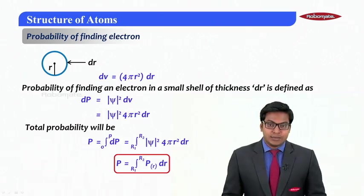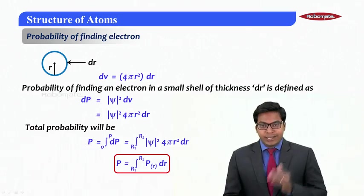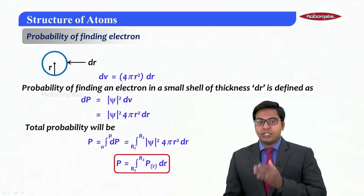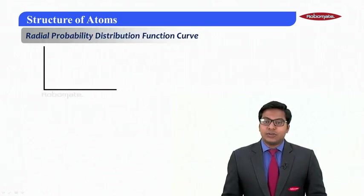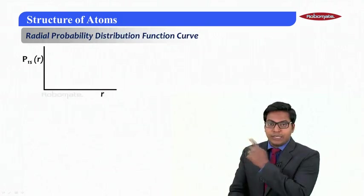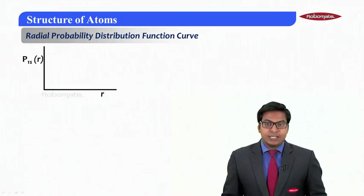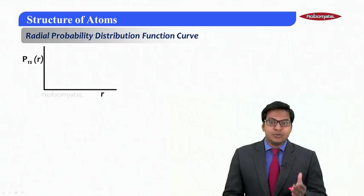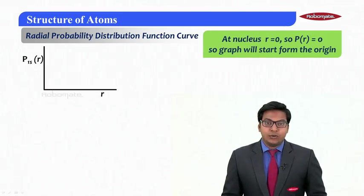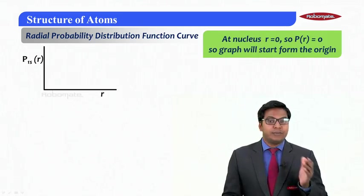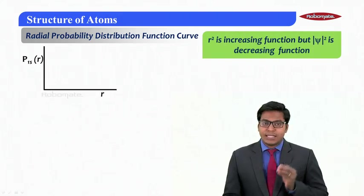Continuing this, now we will try to draw the total probability versus r. If I draw the probability distribution function P(r) versus r, at nucleus r equals 0 so P(r) will be 0, so the graph will always start from the origin.